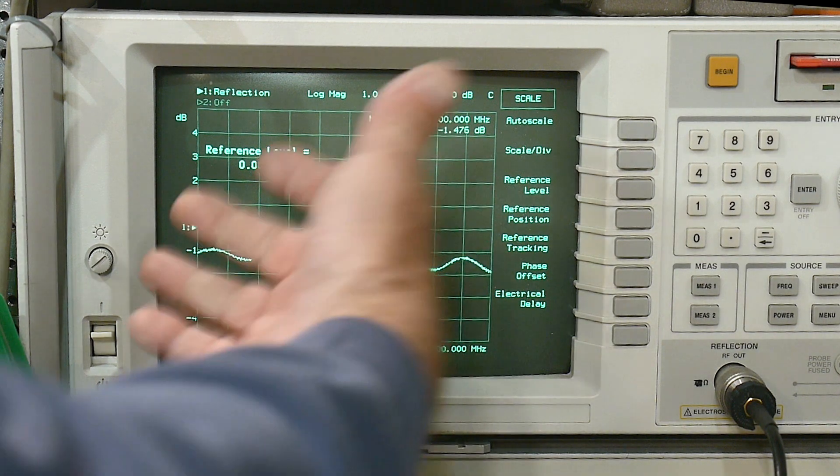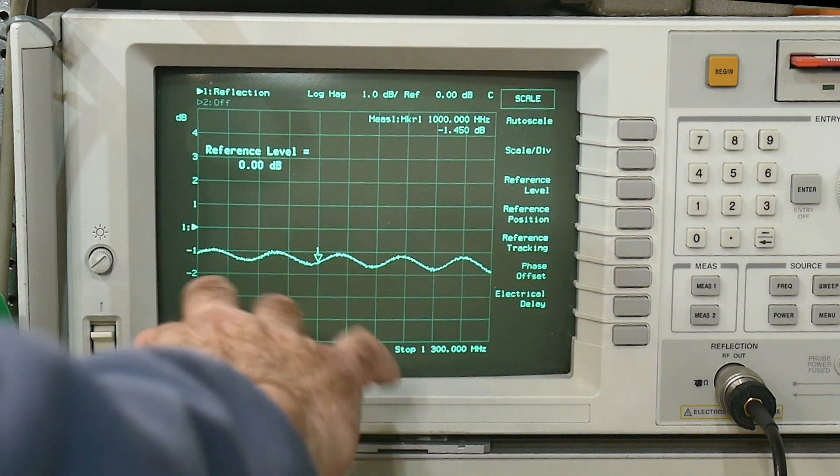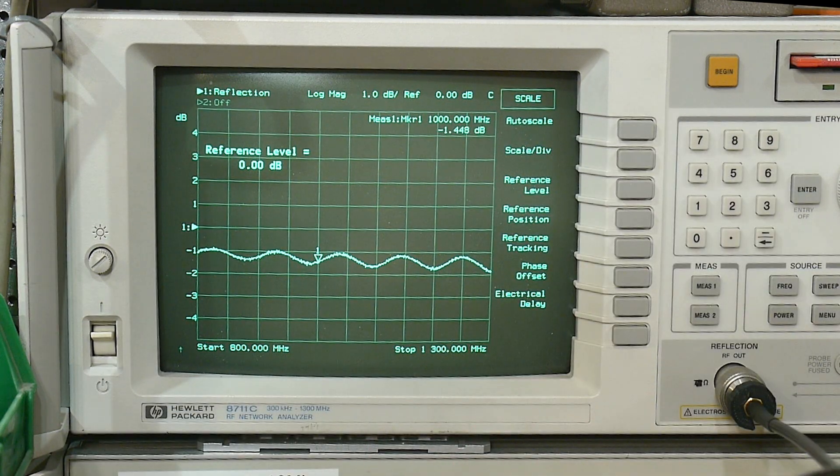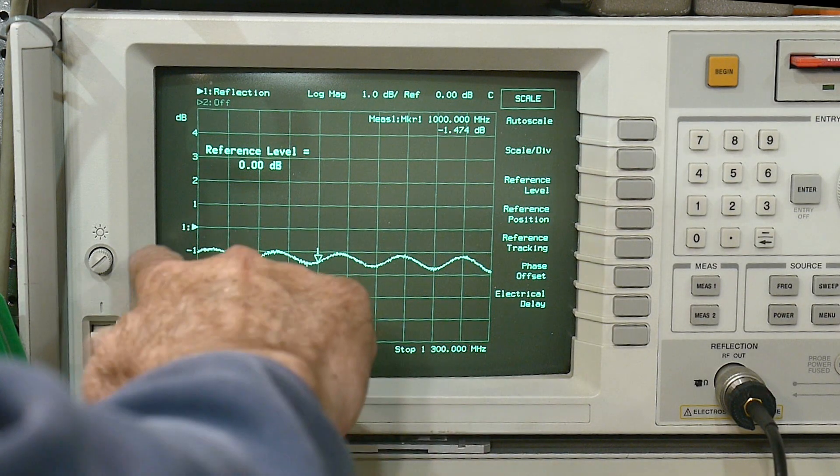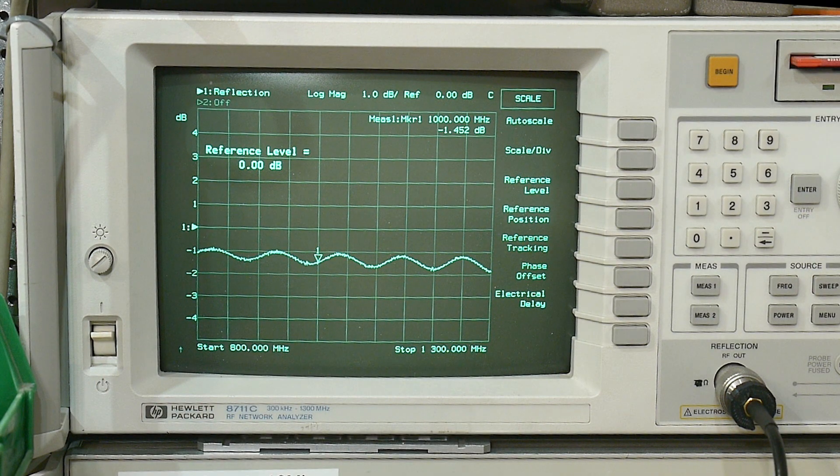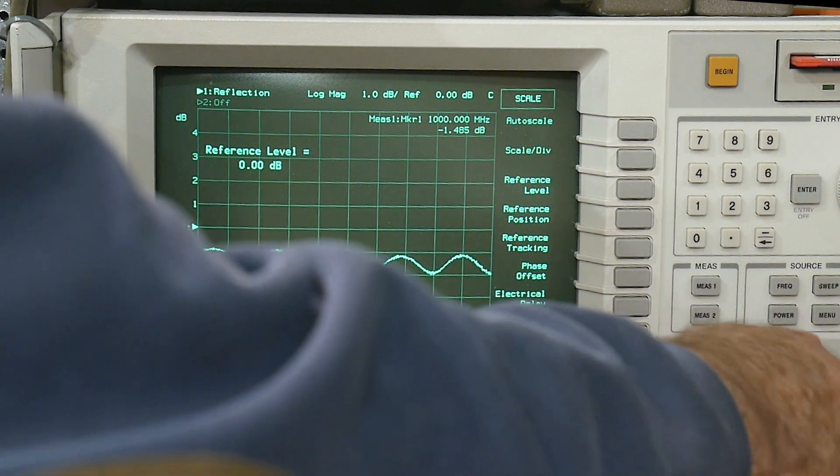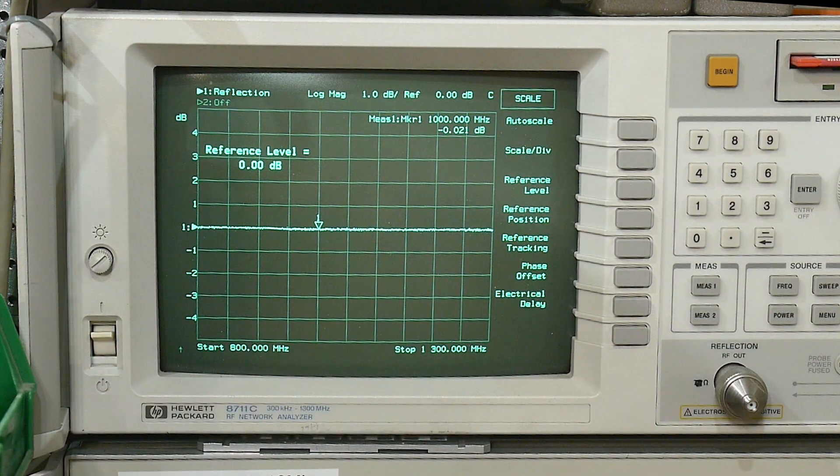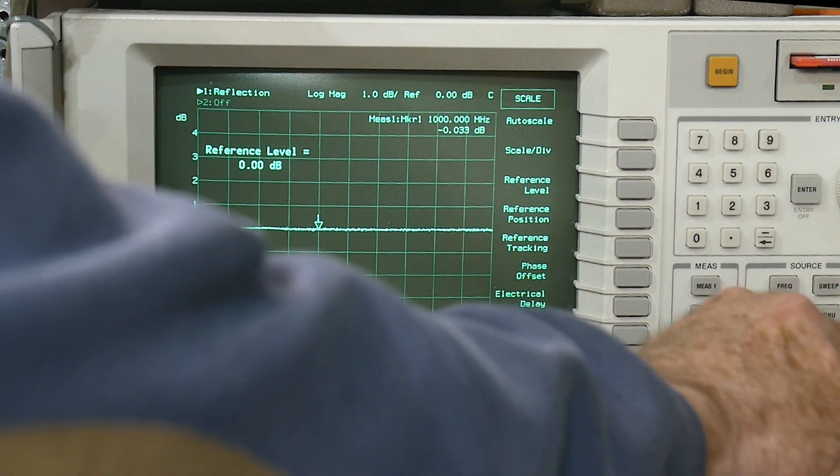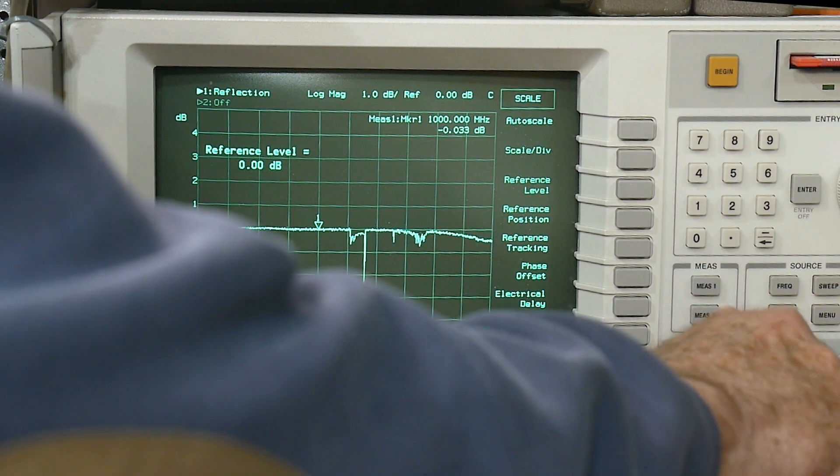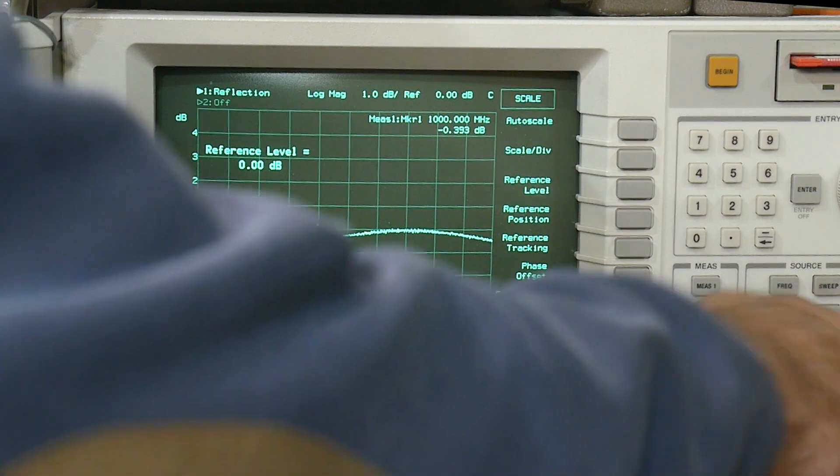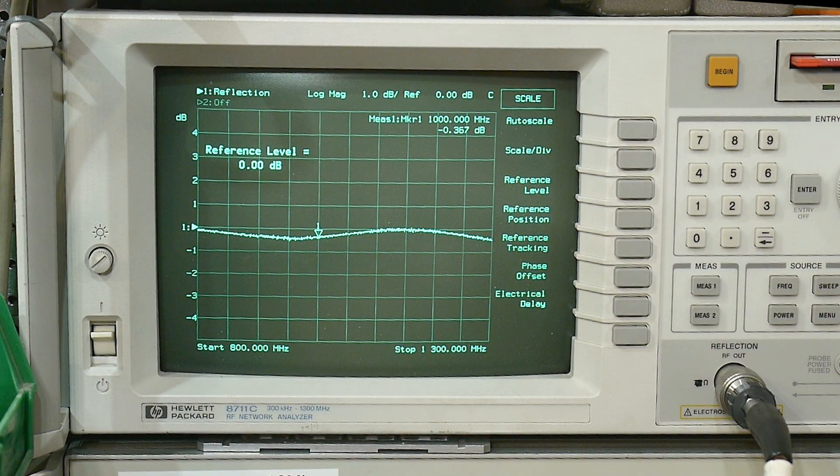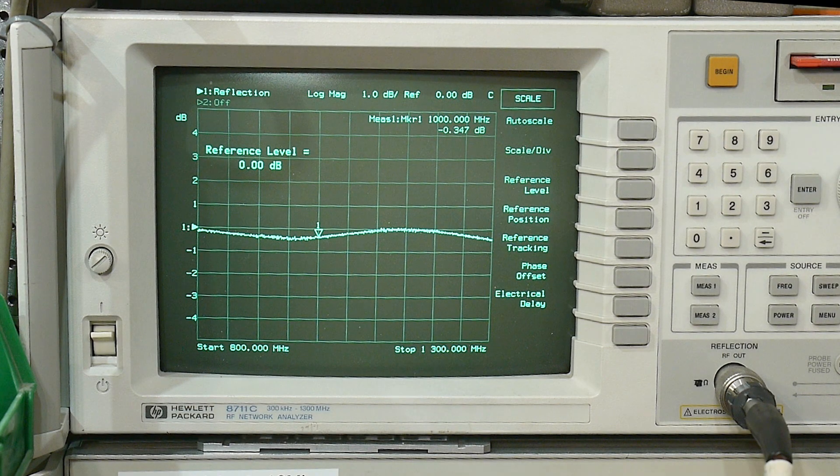you can also look at cables in log mag, return loss. So, this is that really ugly cable. This is the RG1558. so the RG15 here has about a one and a half dB wiggle in it. And we'll put this really, really good cable on. And we'll see what he does. And it has a very, very small wiggle in it. So there's different ways of looking at it.